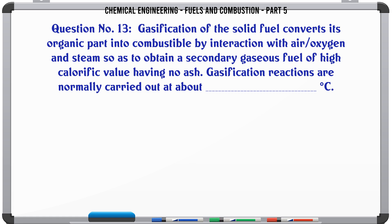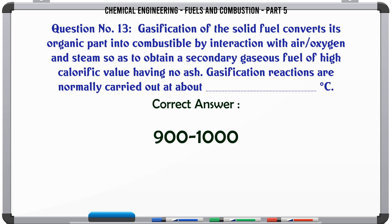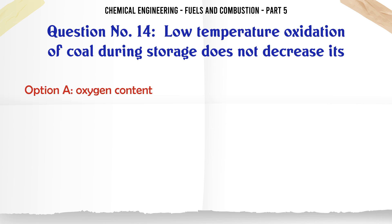Gasification of solid fuel converts its organic part into combustible gas by interaction with air, oxygen and steam so as to obtain a secondary gaseous fuel of high calorific value having no ash. Gasification reactions are normally carried out at about °C: A. 400–500. B. 900–1000. C. 1400–1500. D. 1700–1800. The correct answer is 900–1000.